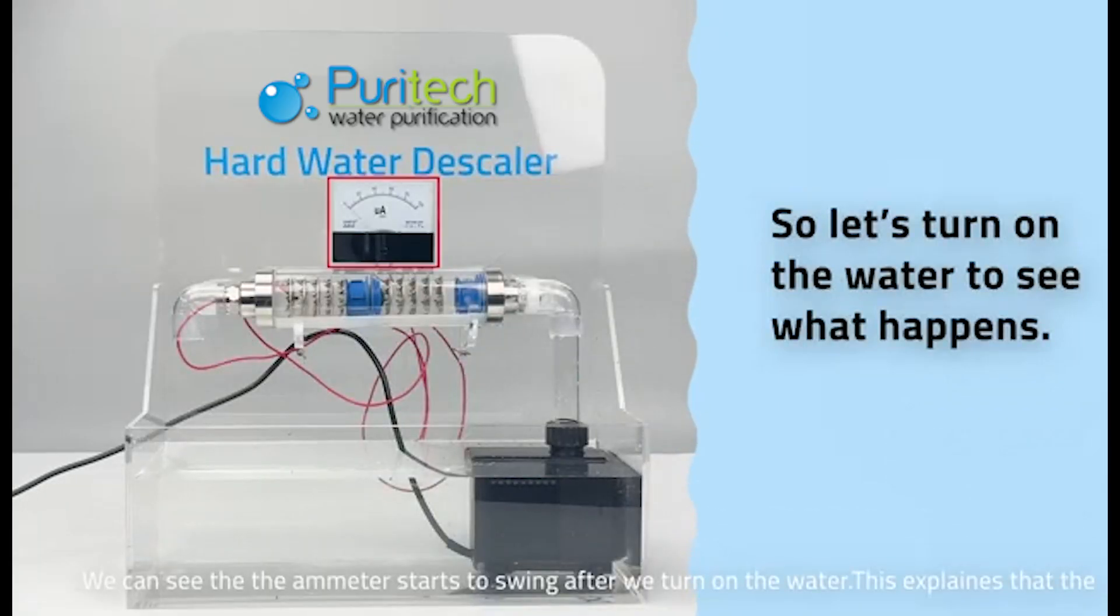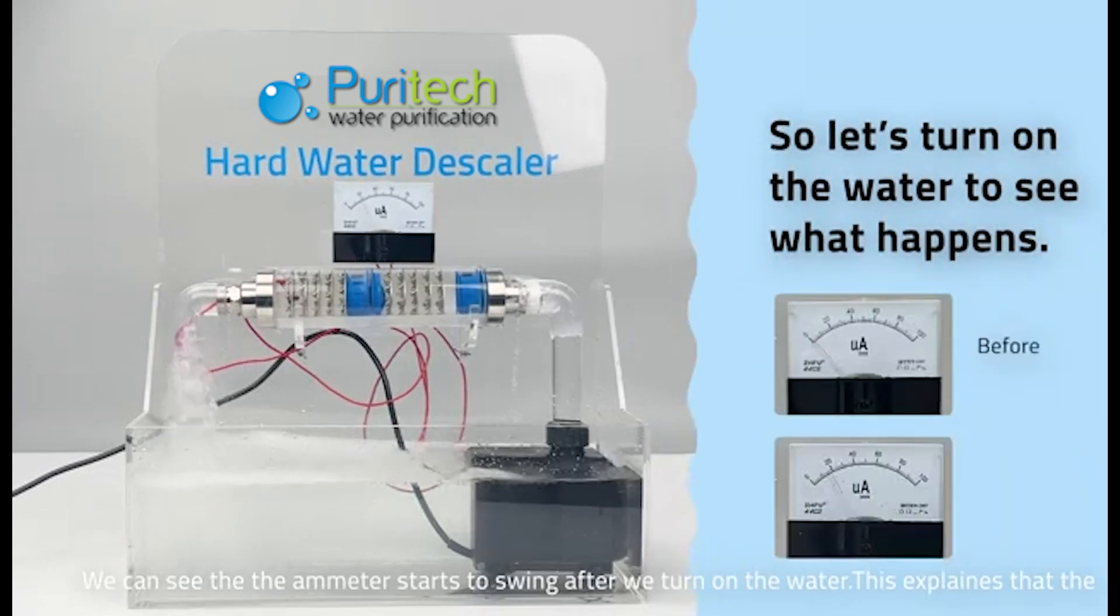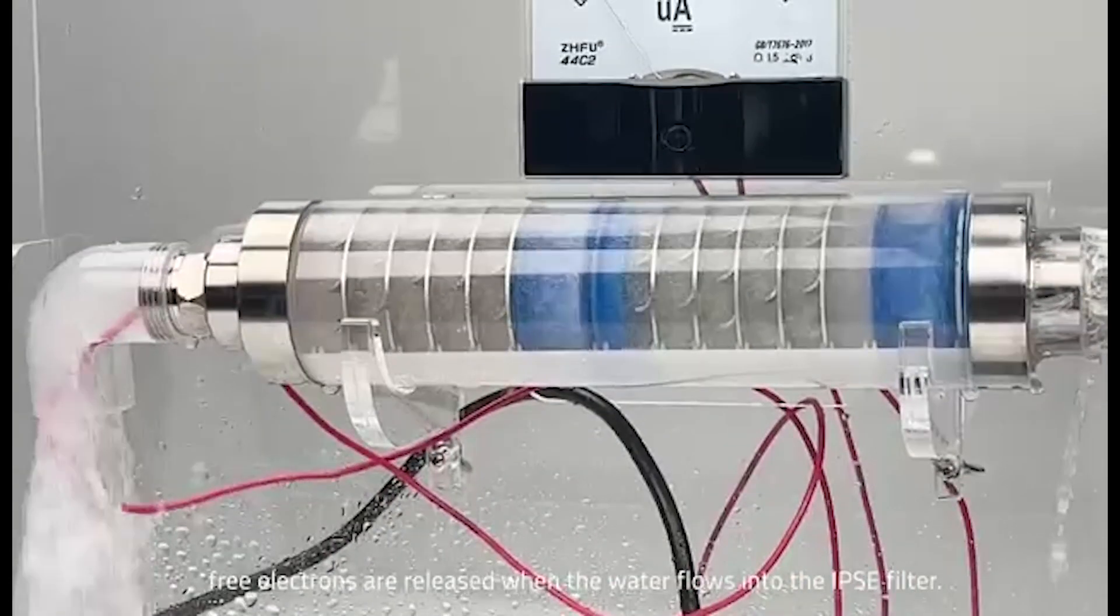So let's turn on the water to see what happens. We can see that the ammeter starts to swing after we turn on the water. This explains that the free electrons are released when the water flows into the IPSC filter.